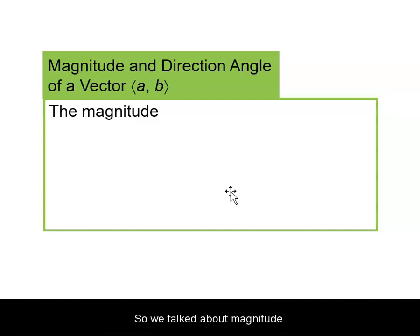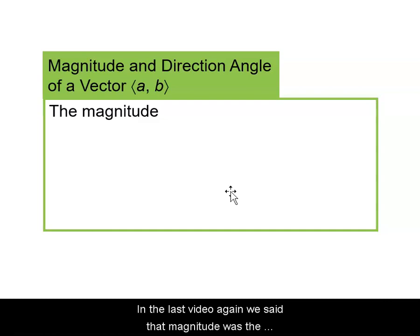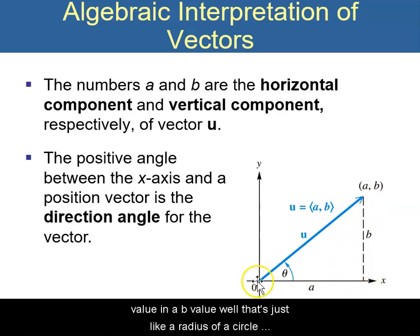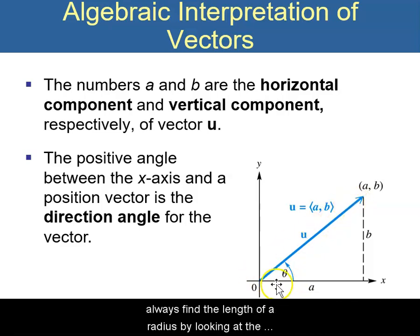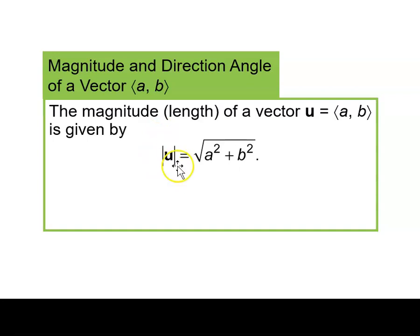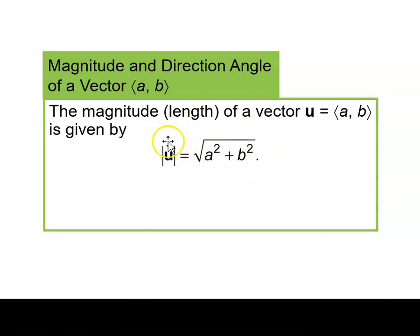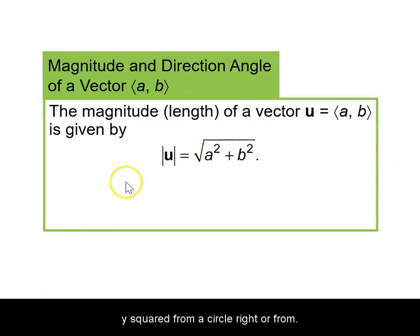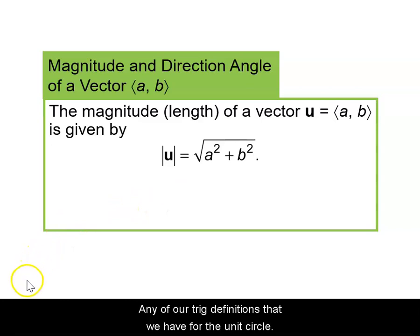The magnitude and direction: magnitude is the length. If we think of this as a radius of a circle rotating through an angle theta with an a value and a b value, we can always find the length of that radius by taking the square root of a squared plus b squared — the Pythagorean theorem. So the length of vector u is the square root of a squared plus b squared, which comes from r equals the square root of x squared plus y squared from the unit circle.